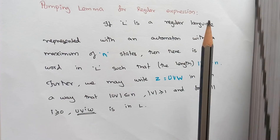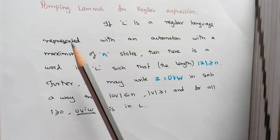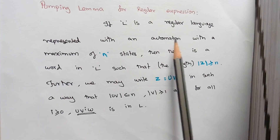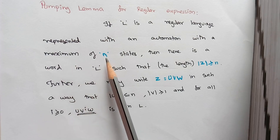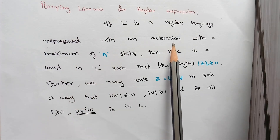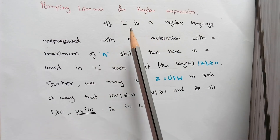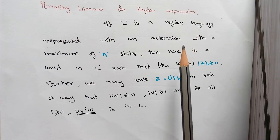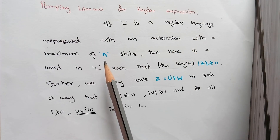The automata can be either an NFA or DFA. If L is a regular language represented with an automata, we have some set of states for this NFA or DFA. We consider the maximum number of states needed for the construction of that automata to be N. For that regular language, we construct an automata and the number of states in the automata is considered as N.